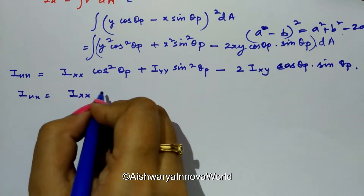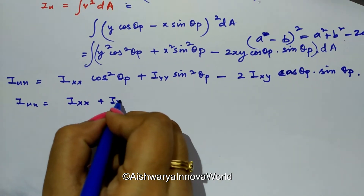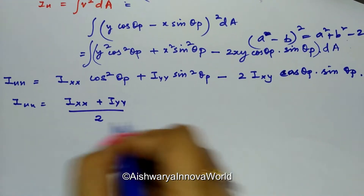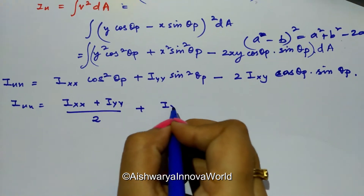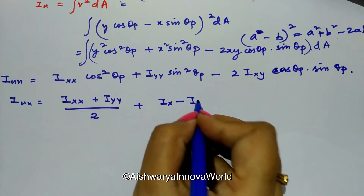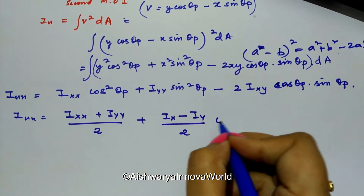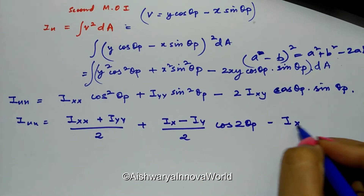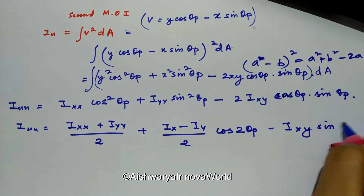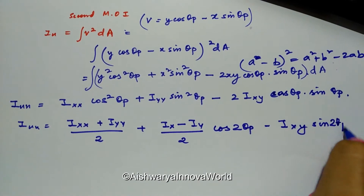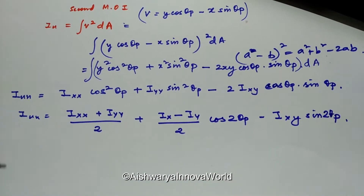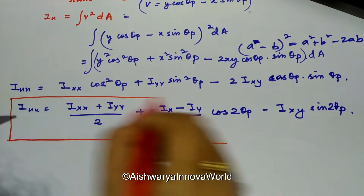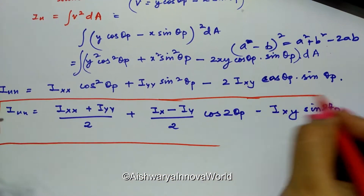Integrating and simplifying, we obtain the important formula: I_uu = (I_xx + I_yy)/2 + (I_xx - I_yy)/2 · cos(2·theta_p) - I_xy · sin(2·theta_p). This is a very important formula.